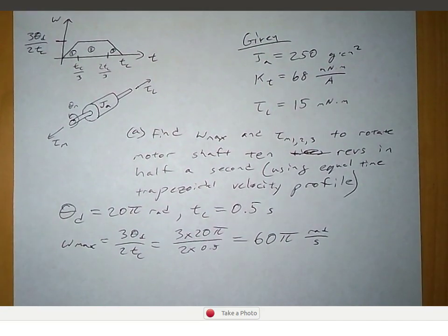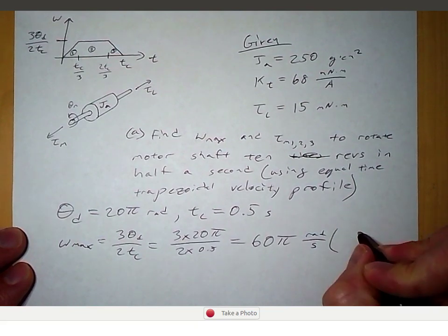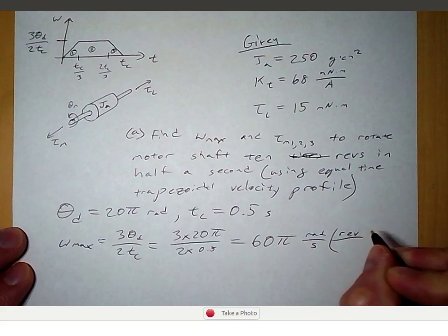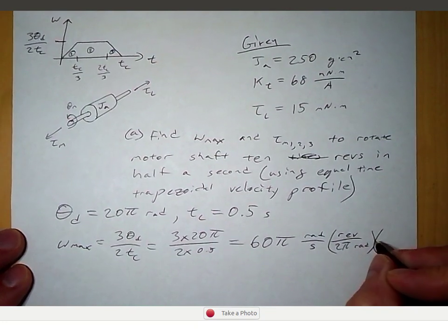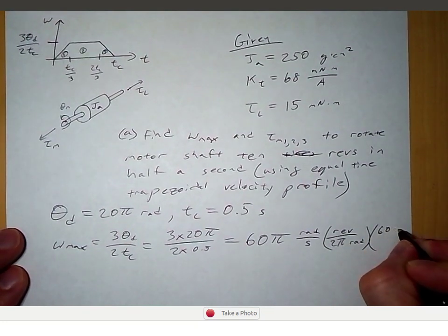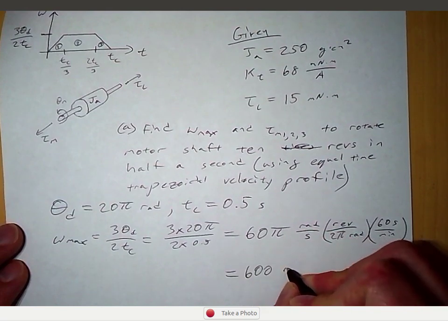Motors are often specified in RPM, so we can convert 60π radians per second to RPM by multiplying by one revolution per 2π radians and then 60 seconds per minute. That gives us a maximum speed of 600 RPM.